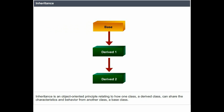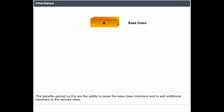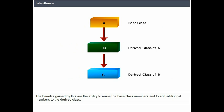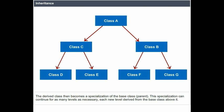Inheritance is an object-oriented principle relating to how one class, a derived class, can share the characteristics and behavior from another class, a base class. This can be thought of as an 'is-a' relationship because the derived class can be identified by both its class type and its base class type. The benefits are the ability to reuse base class members and add additional members to the derived class, making it a specialization of the base class. This specialization can continue for as many levels as necessary, each new level derived from the base class above it.